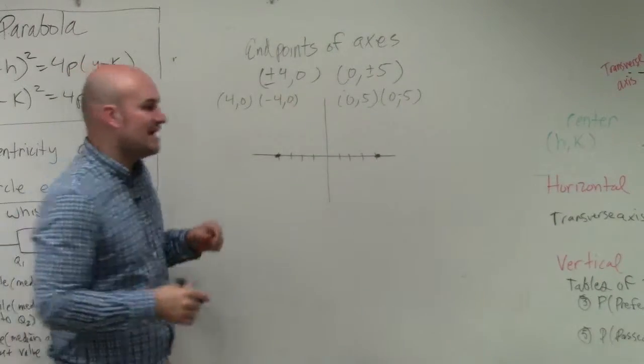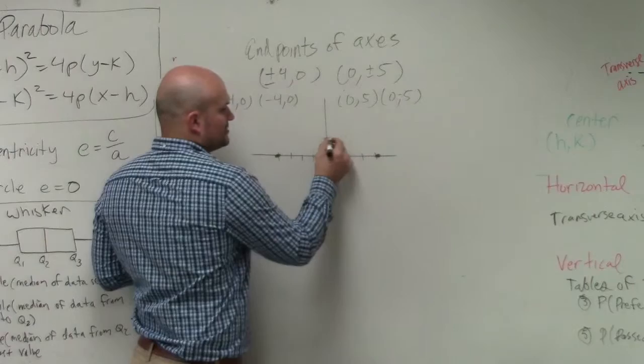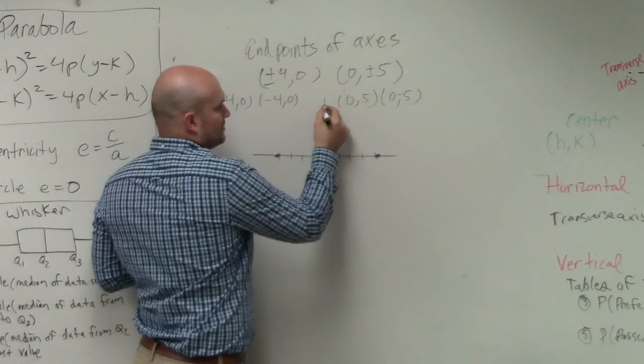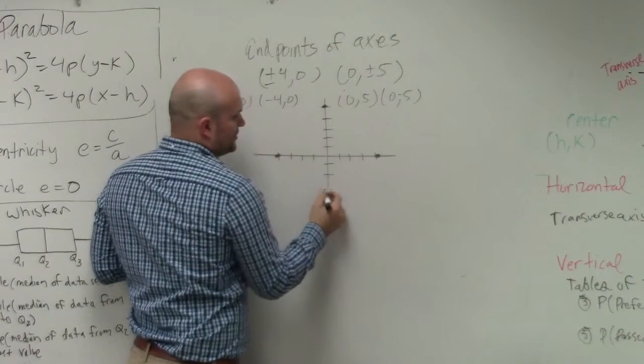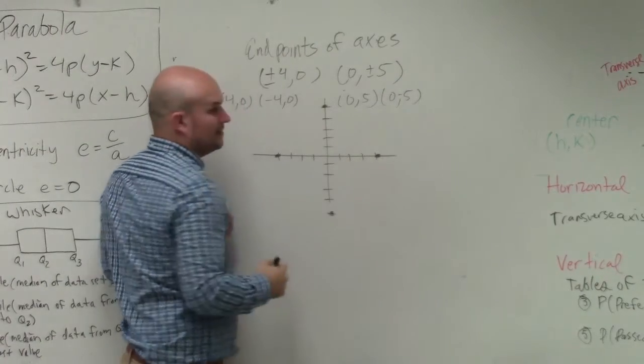Then the endpoints is 5 and negative 5. So 0, 5, 1, 2, 3, 4, 5. Negative 5, 1, 2, 3, 4, 5. OK?